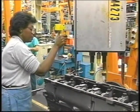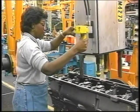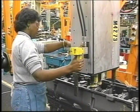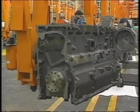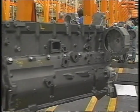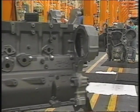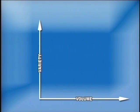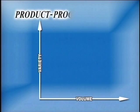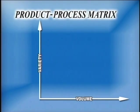A third consideration — the flexibility of the equipment used to create the product — is determined by the product being created, and is often determined by the first two. These two main factors, variety and volume, may be seen as the vertical and horizontal axes of a graph. The result is called the product-process matrix.